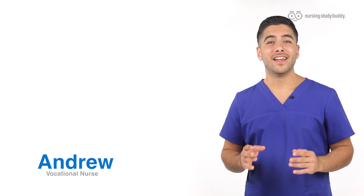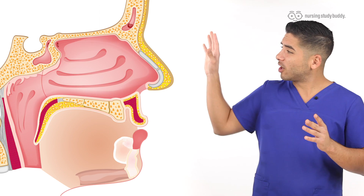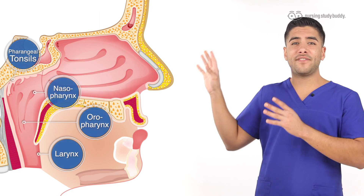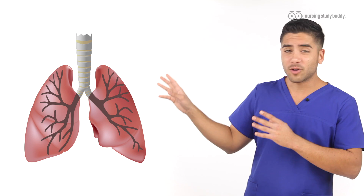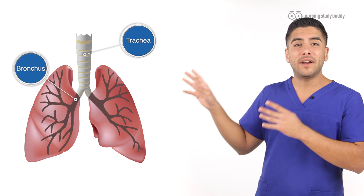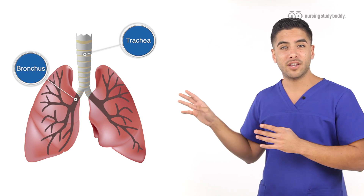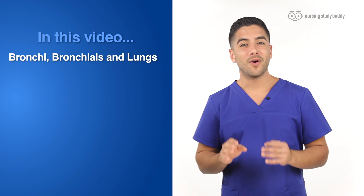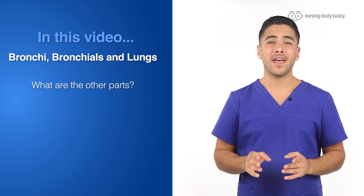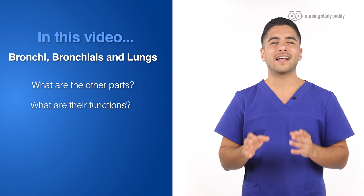Hi everyone, Andrew here. In the last few videos we discussed the upper parts of the respiratory system — the different parts of the nose, the parts of the pharynx, then the larynx — then we started working our way further down the respiratory tract discussing the trachea and bronchus and briefly mentioning the bronchi and bronchioles. In this video we'll be sticking our nose into the last parts of the respiratory system as well as taking a basic look at some more of the system's functionality. So let's get started.